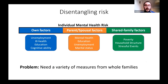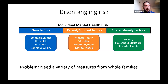What we really want to do is to partition out the different sources of an individual's risk in order to better understand what causes their mental health — partitioning them into factors attributed to themselves, factors attributed to their parents, spouses, or other family members, and also factors attributed to the whole family, shared amongst everyone.